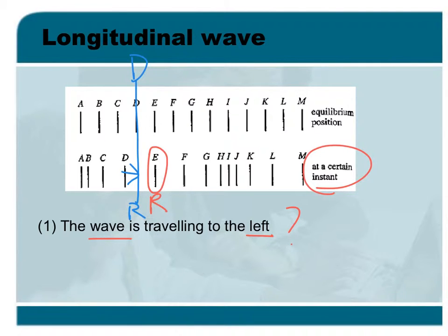But as the question tells us, D is moving to the left. So the first statement must be wrong.